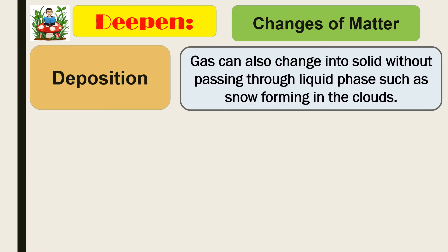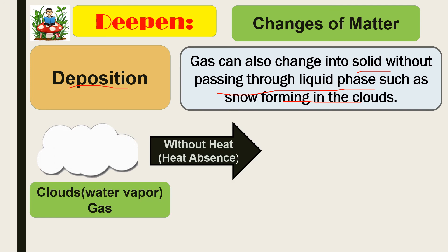The last process is deposition. Deposition is when gas changes into solid without passing through the liquid phase — such as snow forming from clouds. For example, water vapor in the clouds, without heat, will turn into snow. This is something experienced in Japan, but not in the Philippines.